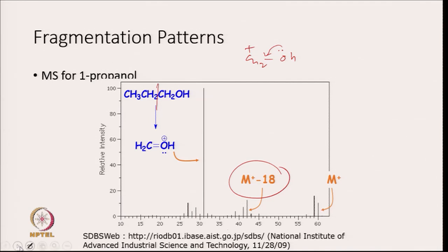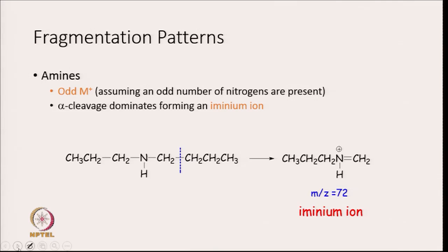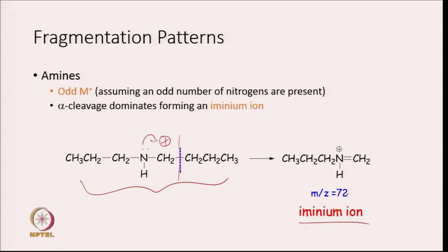For amines, if there is an odd number of nitrogen atoms, you will get an M+ peak which is odd. Alpha cleavage will dominate since it gives an iminium ion in which the positive charge is resonance stabilized. For this amine example, the break takes place at the alpha position so the positive charge will be resonance stabilized, giving an iminium ion at m/z = 72.